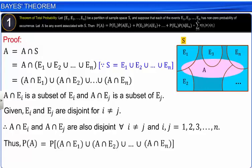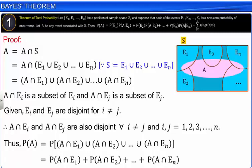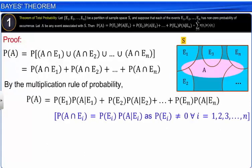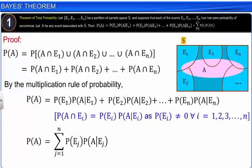Thus, the probability of A is equal to the probability of the union of A∩E1, A∩E2, and so on till A∩En. This equals the sum of the probabilities of A∩E1, A∩E2, and so on till A∩En. By the multiplication rule of probability, this can be written as the summation of the probability of Ej times the probability of A given Ej, where j is running from 1 to n. Hence, the theorem of total probability is proved.